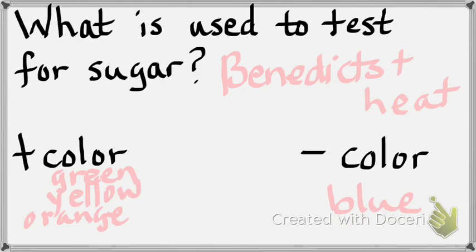Lastly on page 40, question number one: how do you use brown paper to test for lipid? First you put the liquid on the brown paper and evaporate the liquid — we use the microwave for that. Then hold the brown paper up to the light and look for translucence. If you see translucence, that's positive. No translucence, that's negative. Expect many questions on that.